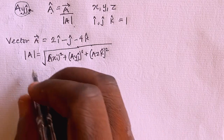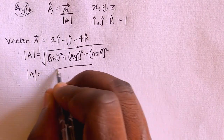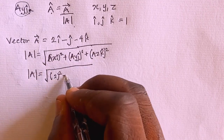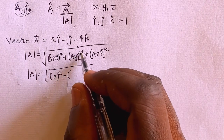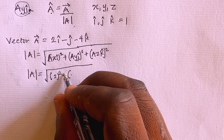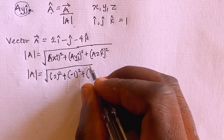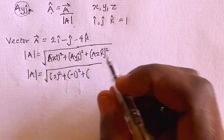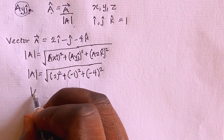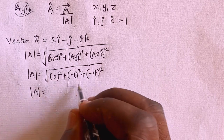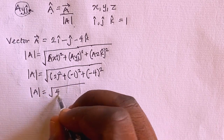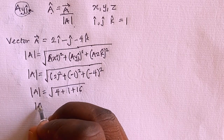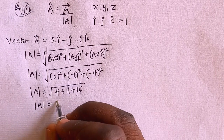So to calculate the magnitude of vector a: a_x_i squared is taken to be 2 squared, plus minus 1 squared, plus minus 4 squared. The magnitude of vector a is therefore the square root of 2 squared which is 4, plus 1, plus 16. So the magnitude of vector a equals the square root of 21, which is 4.58.